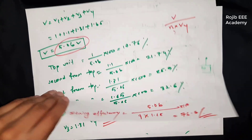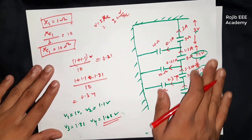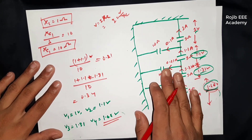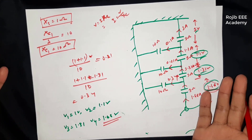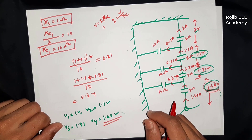This is how we solve this problem. The circuit diagram and voltage drop calculations should be clearly understood. With practice, this type of problem can be solved easily. Thank you.